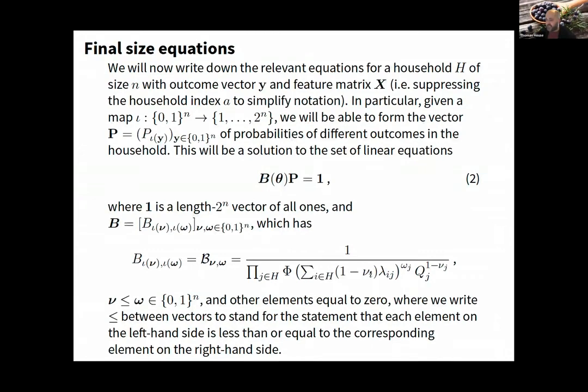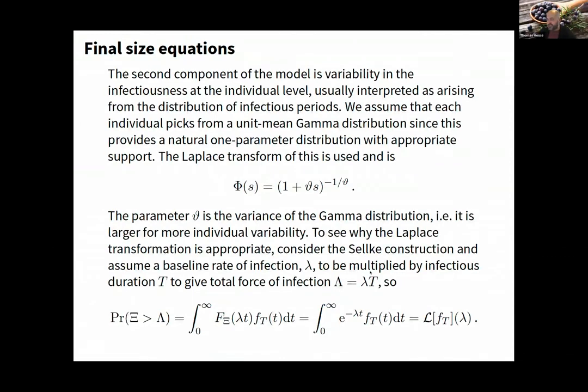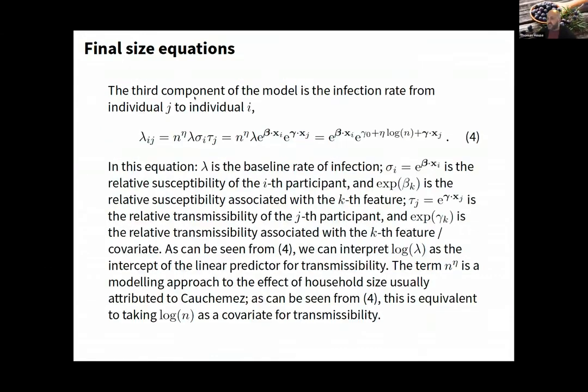The person becomes infectious when their threshold goes below one. You follow that through and get this set of coupled probabilities. The equation looks like this.